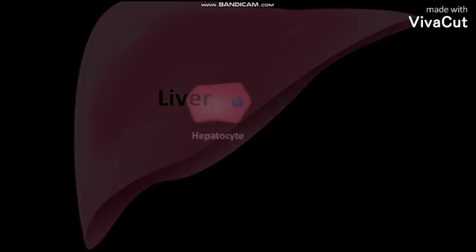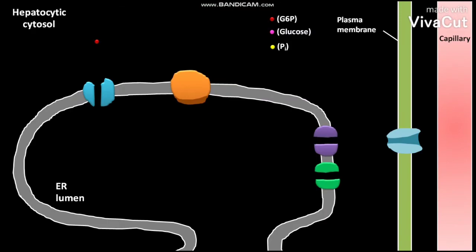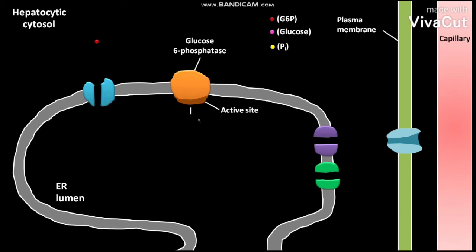The liver contains hepatocytes. In the hepatocyte, the glucose-6-phosphatase is present as an integral membrane protein of the endoplasmic reticulum (ER). The active site of glucose-6-phosphatase is present inside the ER lumen. The glucose-6-phosphatase contains 9 transmembrane helices.